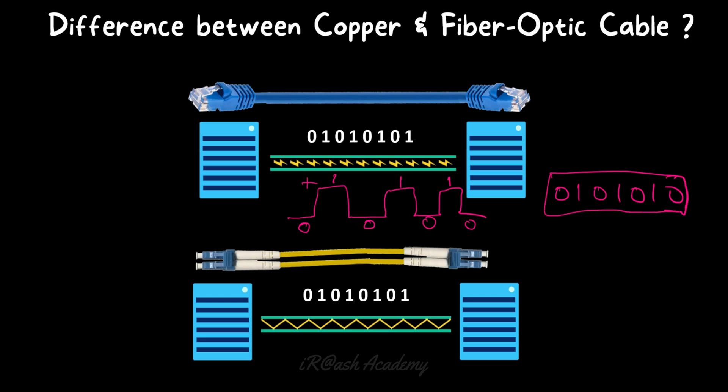The computer receives the electric signal, converts it into binary format by reading positive and zero values, yielding a sequence like 0101010. The computer then converts this binary data into a format the program can understand. The same principle applies to fiber optic cable — the only difference is that instead of electric signals, fiber optic cable uses light. The data flows as light because the inner part of the fiber optic cable is made of glass, and glass reflects light. When the source device sends data, the fiber cable converts it into light, which reflects inside the glass and travels to the destination, where it is converted back into binary and then into a program-readable format.